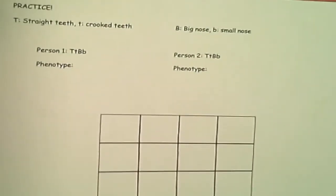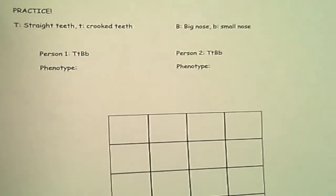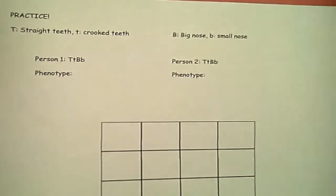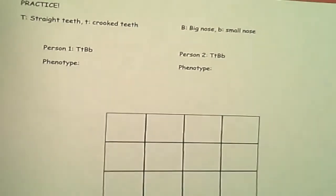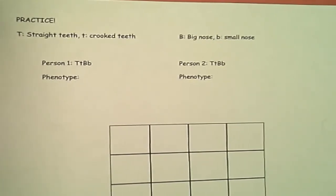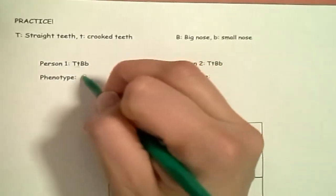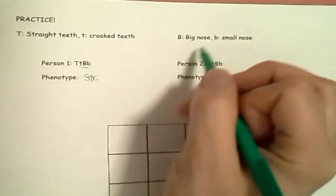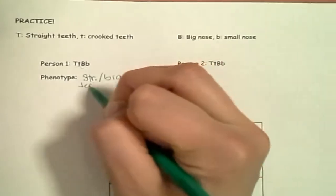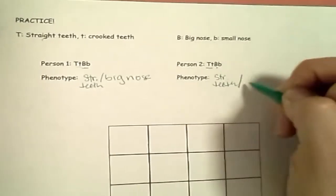What you need to do next is solve a similar problem — it's going to have some different combinations. This video is a little longer because I'm actually going through the examples. If you know how to do this or want to try it yourself, skip to the answer. If not, stick with me for extra practice. This person has straight teeth and a big nose; this person also has straight teeth and a big nose.